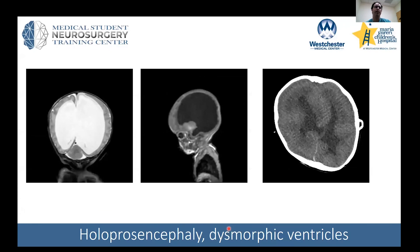Not all patients have normal ventricles. This is a patient with holoprosencephaly, where some midline structures do not fuse and there is really just one large ventricle. This exists on a continuum. Here is an example of dysmorphic ventricles that look very abnormal, and you can tell this patient has a shunt — you can see the valve on the side.